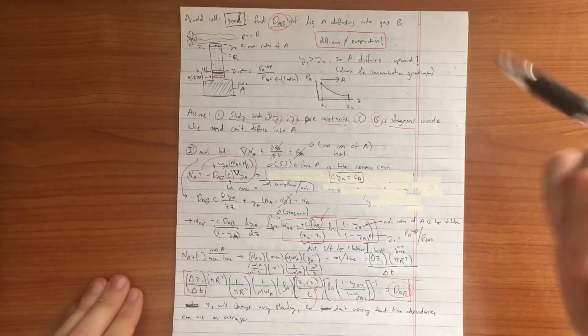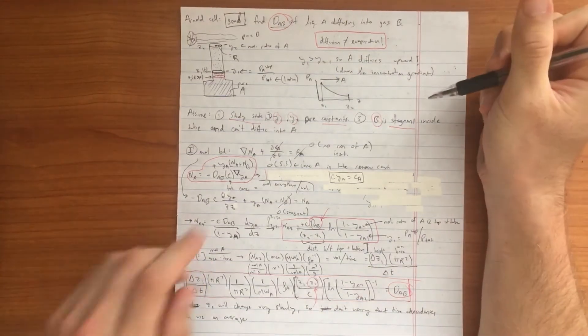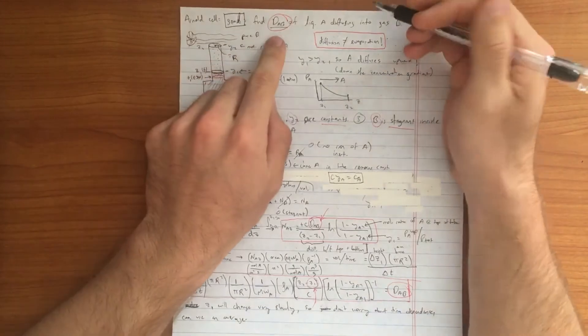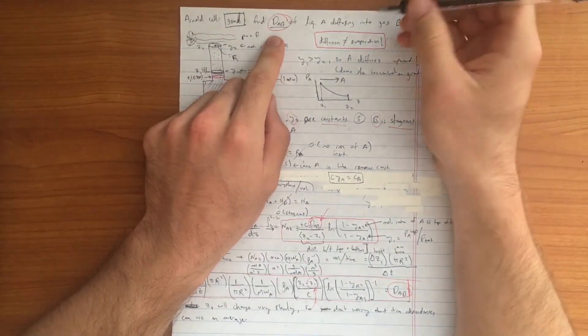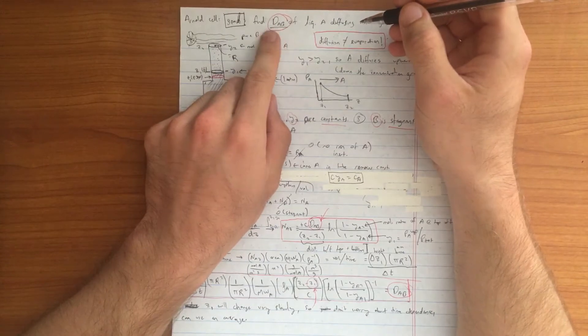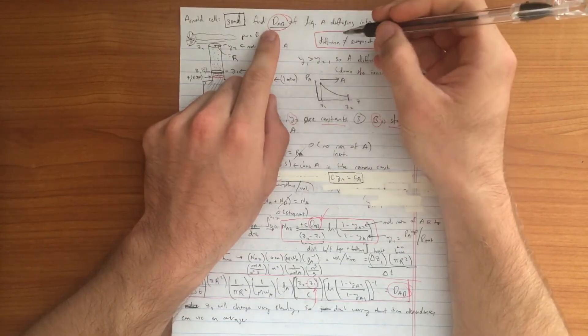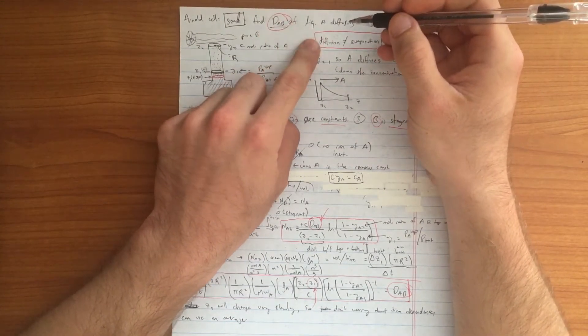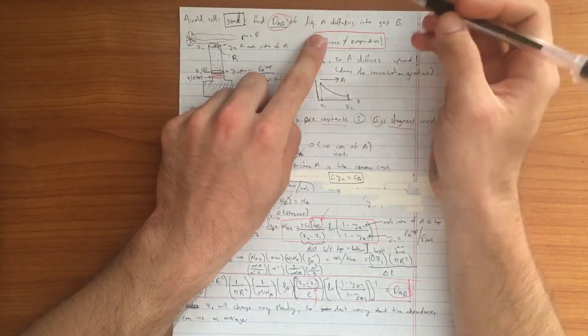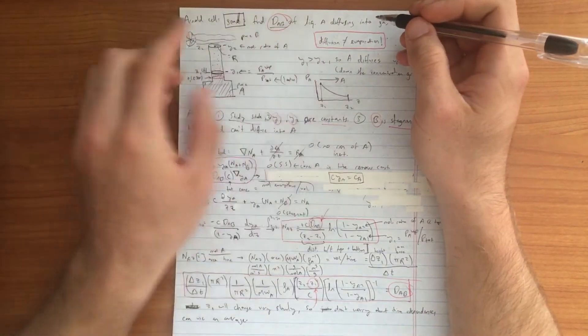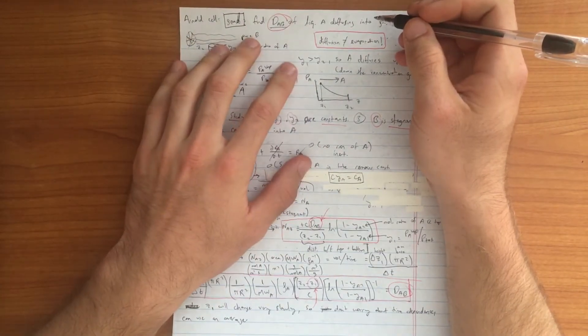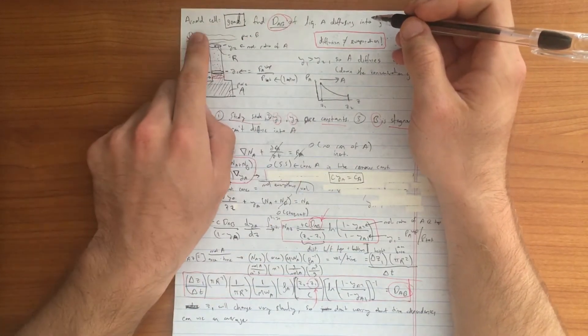A common thing chemical engineers need to find in practice is the diffusivity of certain components in other species. So in this case, one example would be how does a liquid called A diffuse into a gas called B? It's a generic example. To do that, chemical engineers use something called Arnold cells.